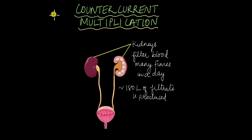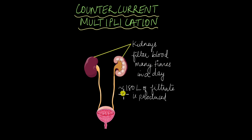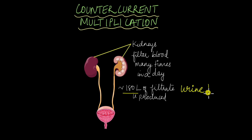Here's a bit of trivia for you. Our kidneys filter the blood in our body many times in a day. And upon doing so, the kidneys produce around 180 litres of filtrate, which means that around 180 litres of urine is produced by the kidneys in a day.